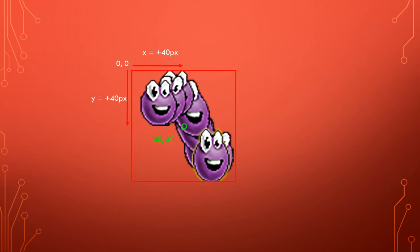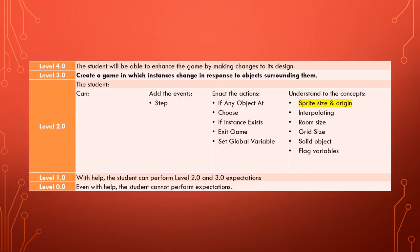It's an offset of 40 pixels to both X and Y. A lot of this will make more sense when we get into GameMaker and start putting those values in — you'll understand where those 40-pixel offset calculations are coming from. This video has basically been about understanding the idea of sprite size and how that impacts upon where you place your origin point.